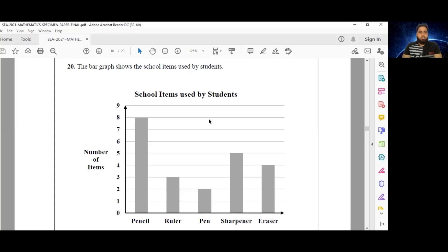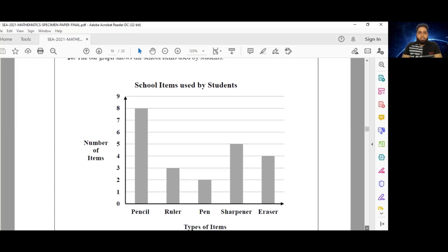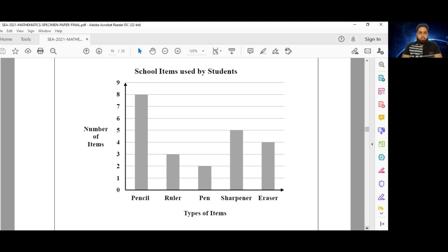Welcome back, everybody. So number 20, the bar graph shows the school items used by students. So we have school items used by students, the title of our bar graph. We have the number of items being displayed, and we have the different types of items. Okay, so we have the number of items here on this vertical axis, and on the horizontal one, we have the types of items. We have pencils, rulers, pens, sharpeners, and erasers. Okay, so eight pencils are used by students, three rulers, two pens, five sharpeners, and four erasers. So we come across from the top of the bars over to our number of items axis, and we can read off those numbers like I just did.